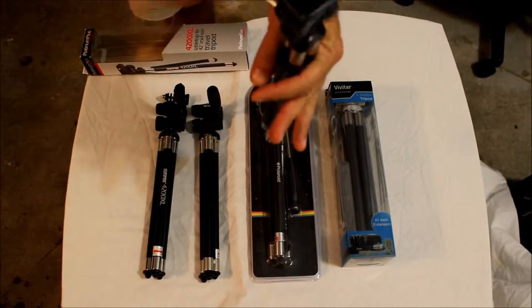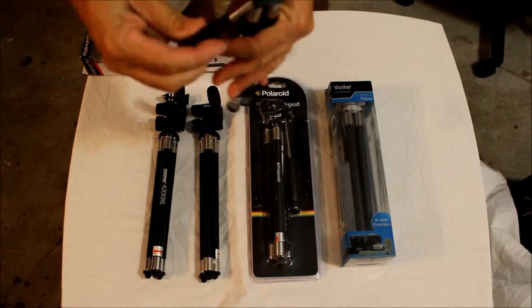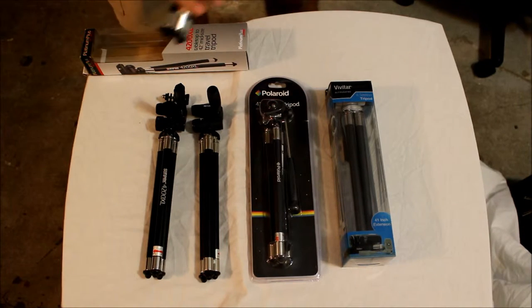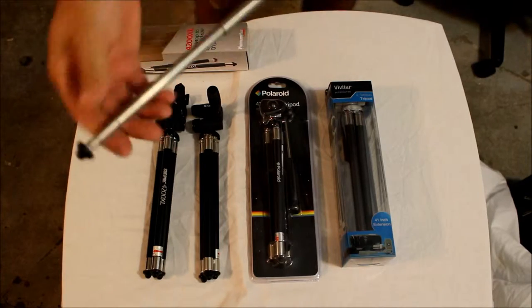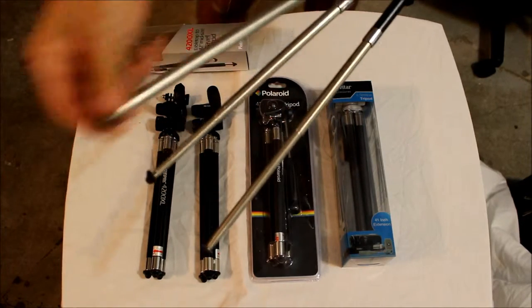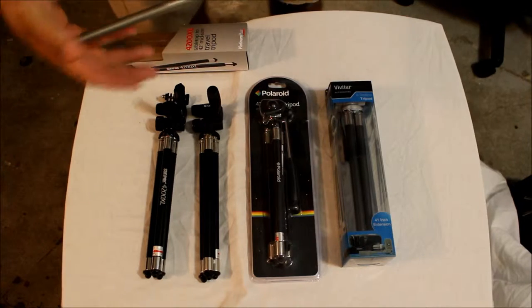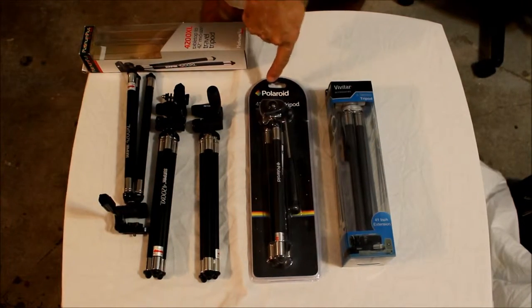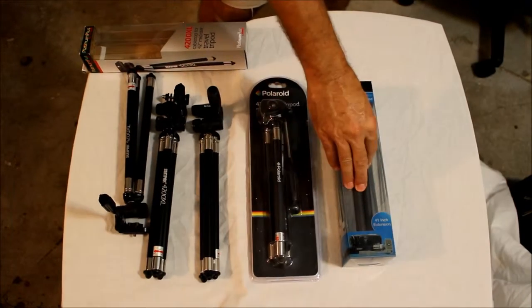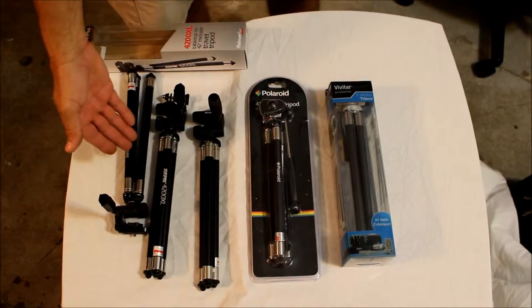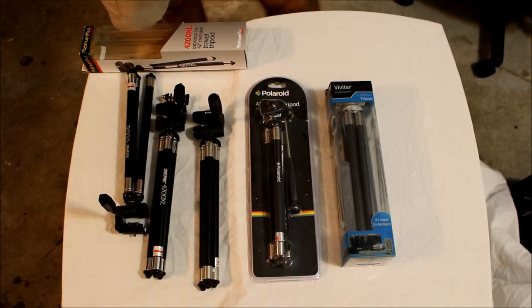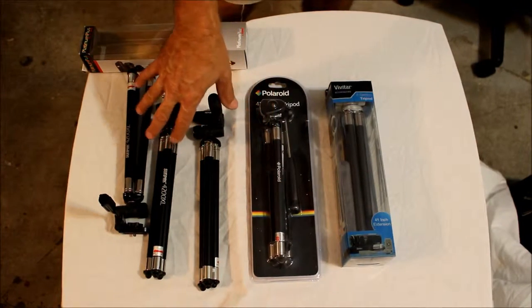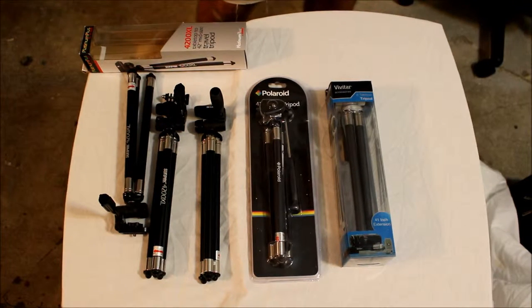They have a side to side and an up and down and you can tighten it up, which I like. And they all have the ability to be extended. So I'm just going to go through a couple of scenarios here. I'm going to get these opened up and talk a little bit about the Polaroid, the Vivitar, and the SunPak, and give you an idea how I use them and maybe how you can use them.